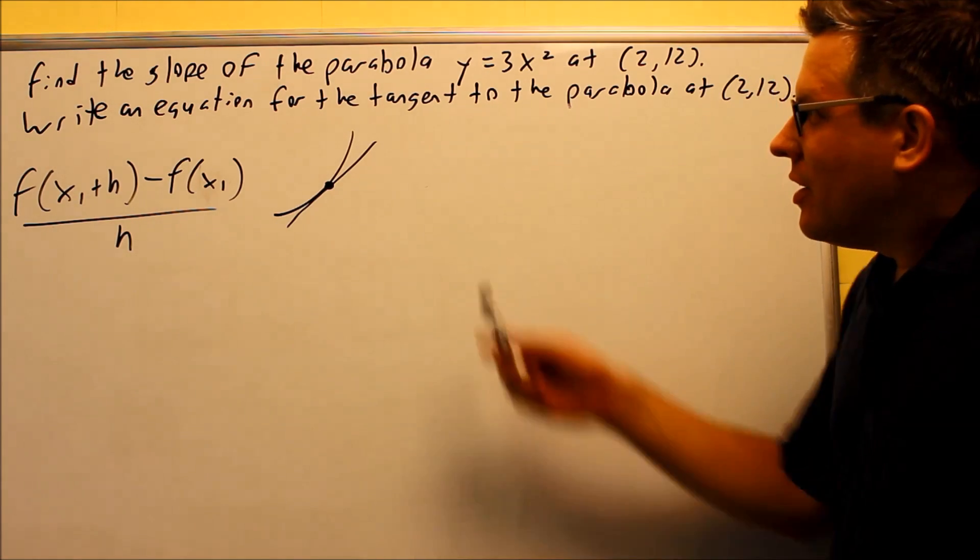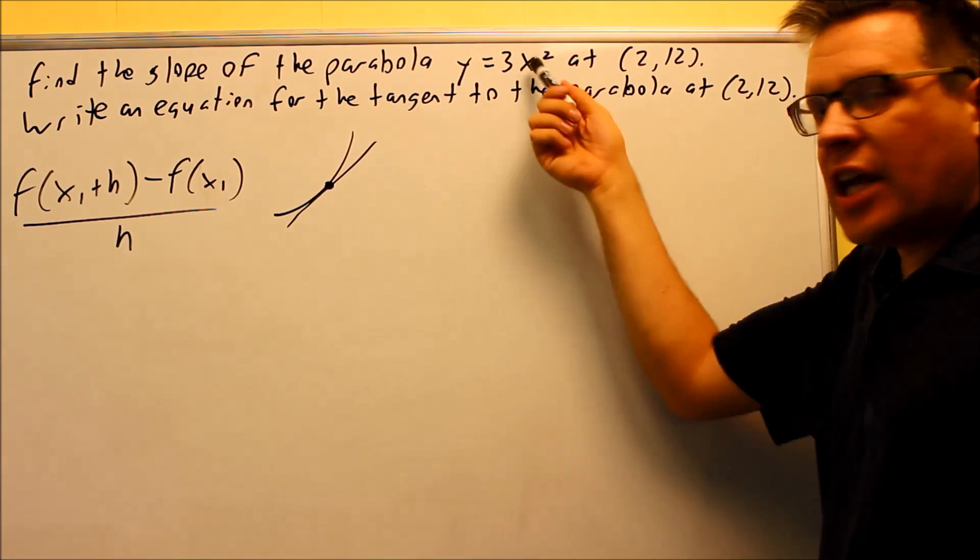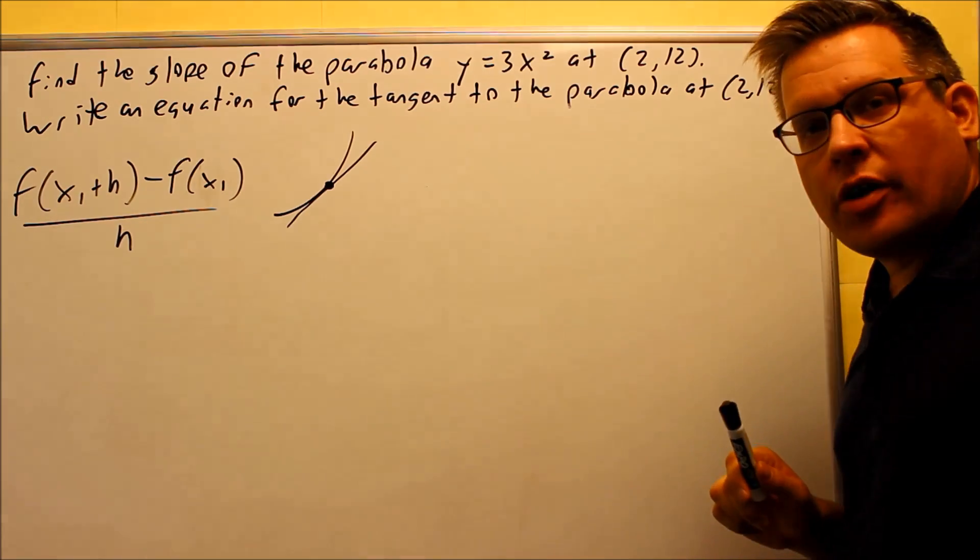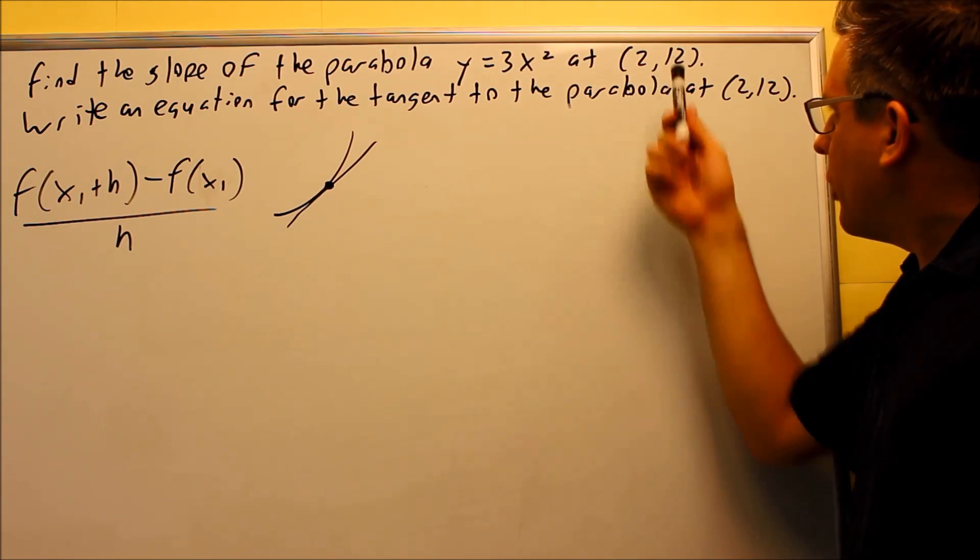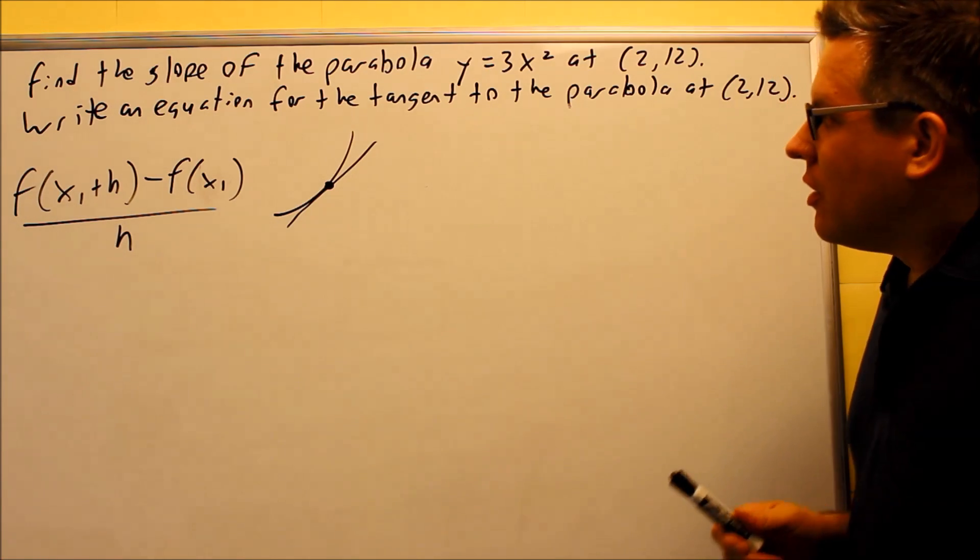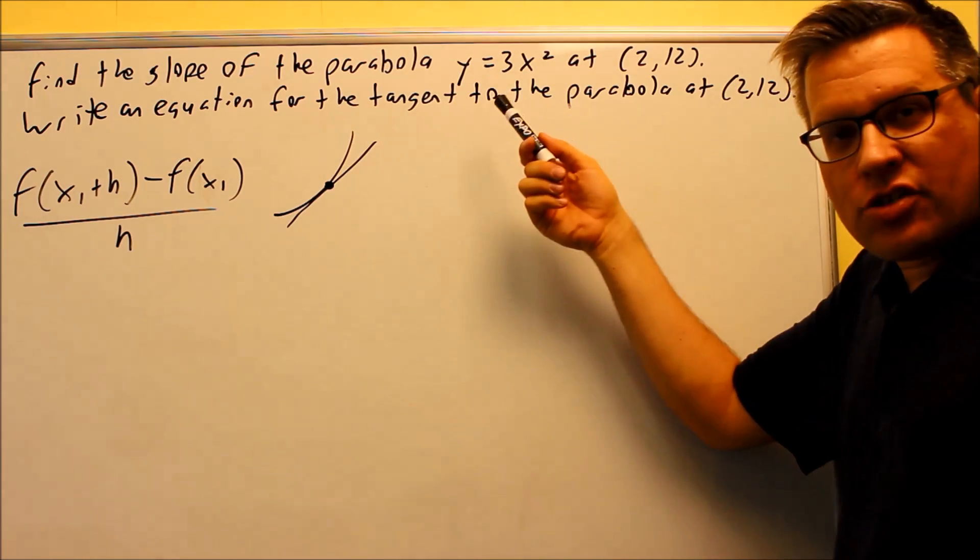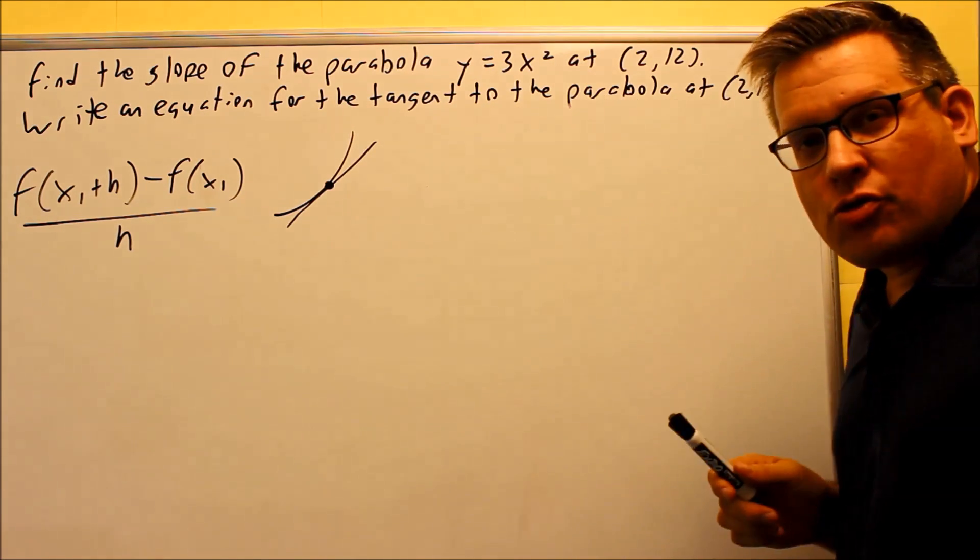Okay, on this problem, they want us to find the slope of the parabola. They give us the equation y equals 3x squared at that point right there, 2 comma 12. They also want us to find the equation for the tangent line of the parabola at 2, 12.